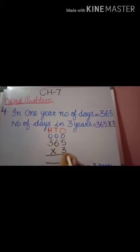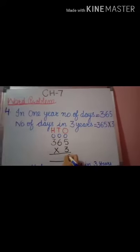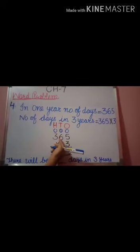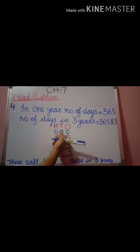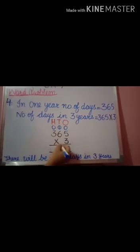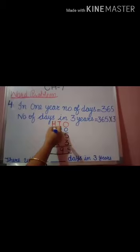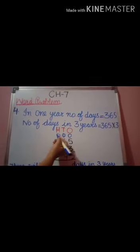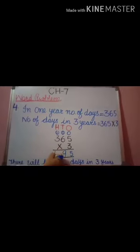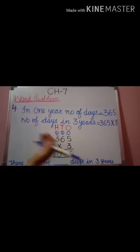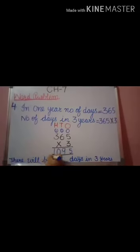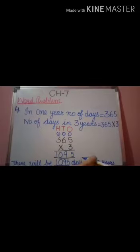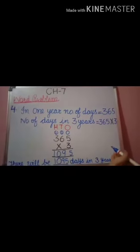So 365 multiplied by 3. 3 times 5 is 15. 5 is here and carry 1. 3 times 6 is 18, plus 1 is 19. 9 is here and carry 1. 3 times 3 is 9, plus 1 is 10. So the answer is 1095. There will be 1095 days in three years.